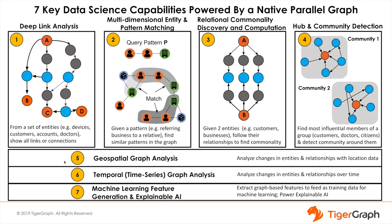At the base of this figure are three capabilities which cut across horizontally. Two of them refer to particular types of data and the third addresses machine learning. Geospatial graph analysis analyzes changes in entities and their relationships with location data. This is useful in understanding the movement of people and goods through a geographic area to identify bottlenecks in transportation capacity. When combined with Entity 360 and pattern matching, it powers personalized real-time campaigns or offers tailored to individual customers' preferences and interests.